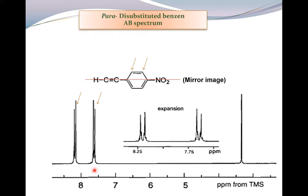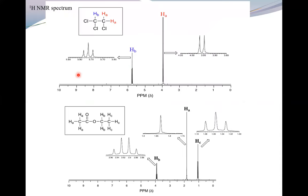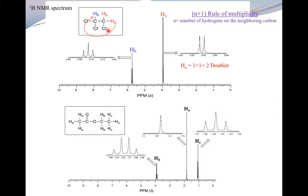Expansion means that if you don't see the peaks clearly, you take that region and expand it. This AB spectrum means a mirror image, so you draw the para-substituted benzene ring. If you see such a phenomenon, immediately draw para substitution. You can also practice with the N+1 rule for multiplicity about the hydrogens — for example, HA and HB, where HA appears as a doublet.